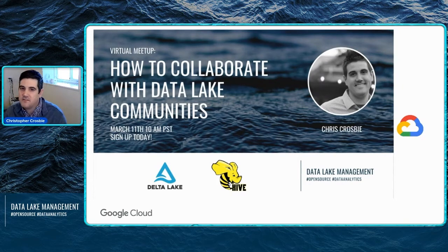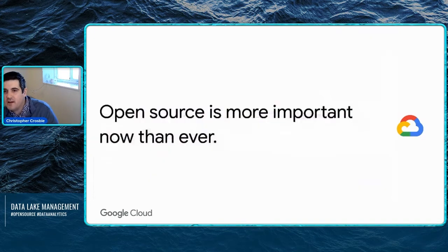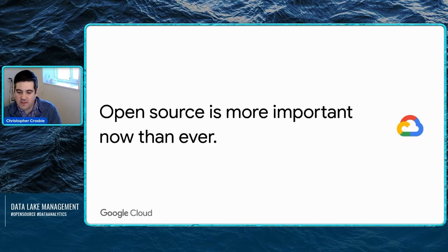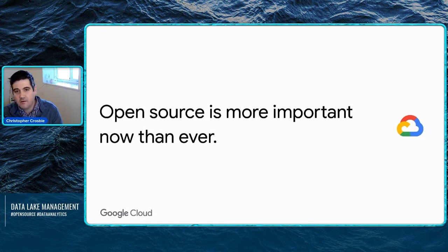Just to kick things off and explain why we're doing this — we fundamentally believe at Google that open source is just more important now than ever. Digital transformation with things like COVID has just accelerated everybody's progress in terms of how they need to revolutionize their business. We really have to have that stable open source layer that we can all work together on to really improve and modernize everybody's stacks.